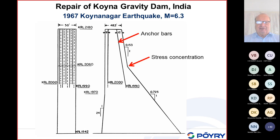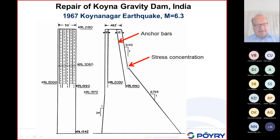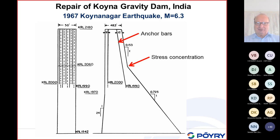Regarding the repair of Koina gravity dam following the 1967 Koina earthquake: rock anchors were provided for strengthening. The damage occurred at the kink in the dam profile — a stress concentration point. If any crack develops, it develops at such a weak location and preferably propagates along the lift elevation, as in the case of the Sefidrud Dam in Iran. In your dam design, do not use such kinked profiles — they are not good and are very critical.